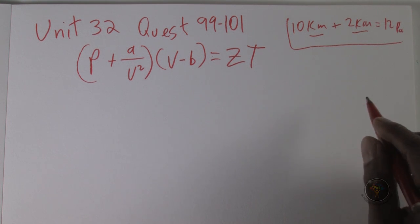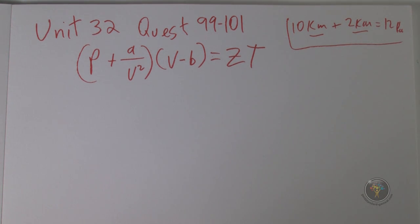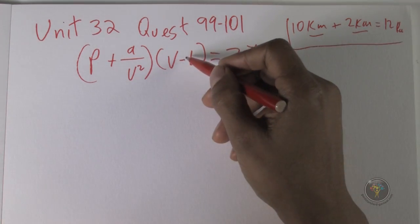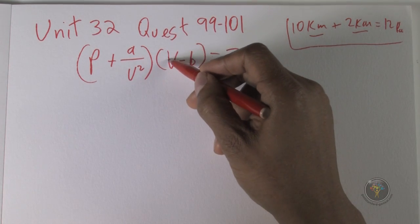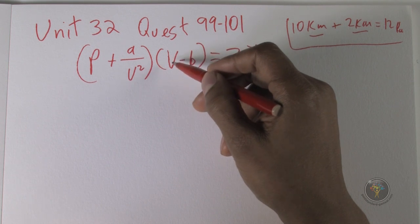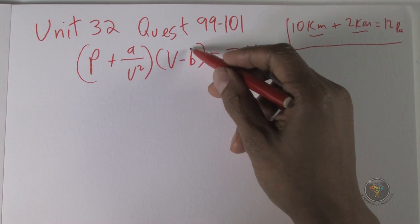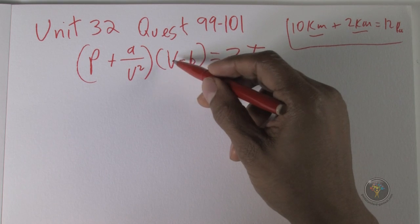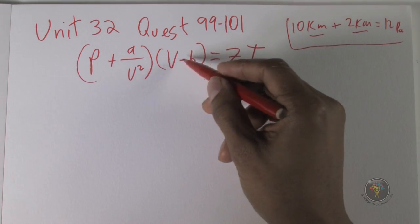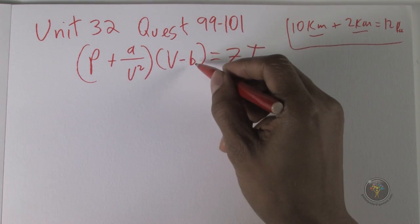Anytime you see that you're adding or subtracting data, you know that they are sharing the same units. So for question 99, the dimensions of B are: well, I know that V is for volume and we're told that B is being subtracted from volume, so clearly they must be the same units. So B is volume.